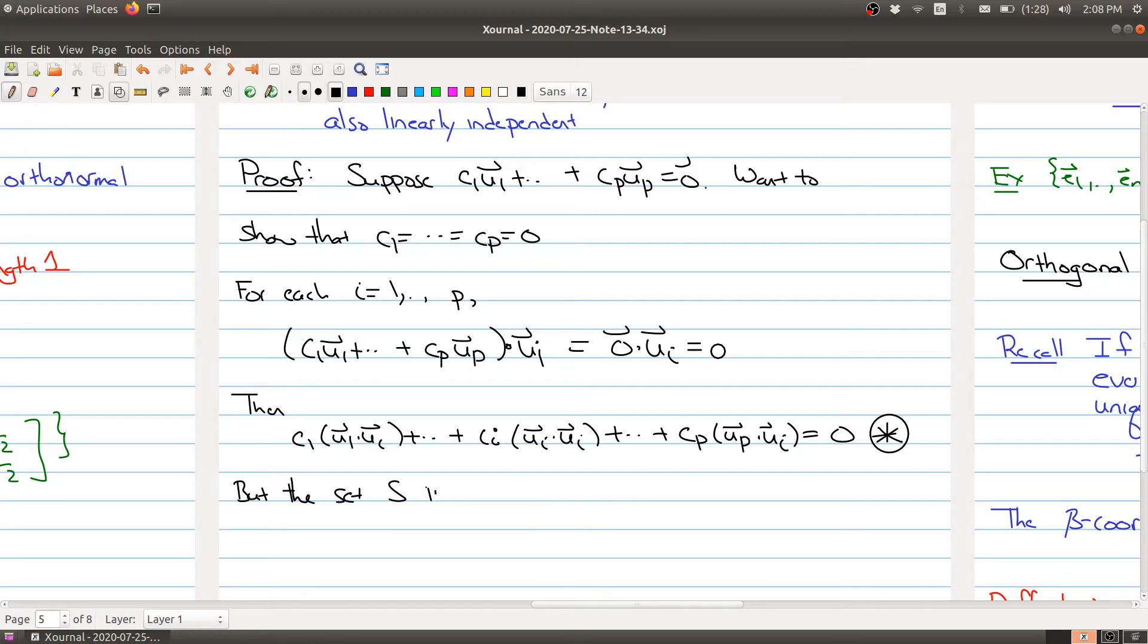But the set S is orthogonal, so uj dotted with ui is equal to zero for j not equal to i. So that means that as long as we're not looking at this middle term, all the other terms become zero.